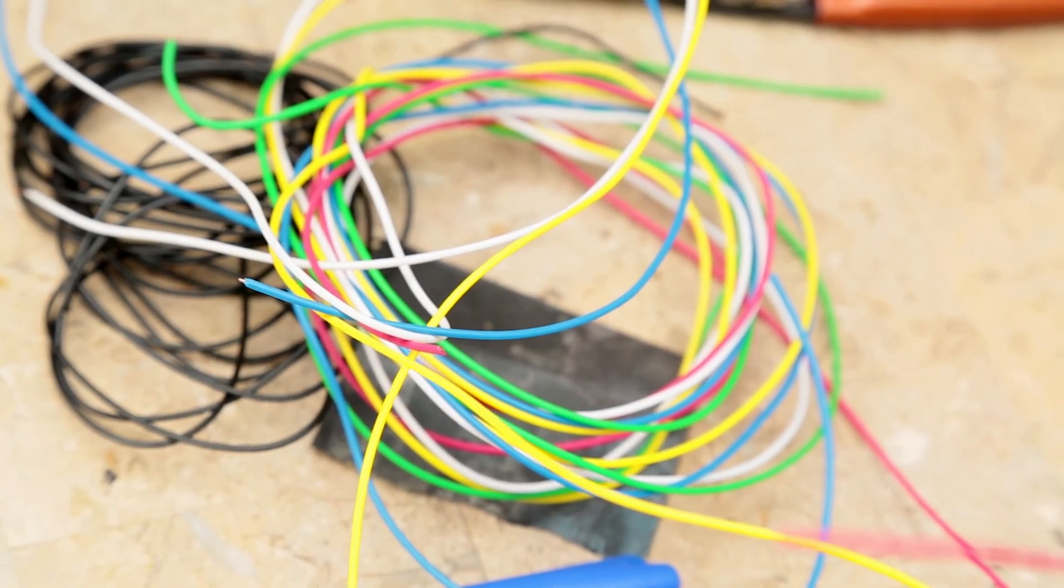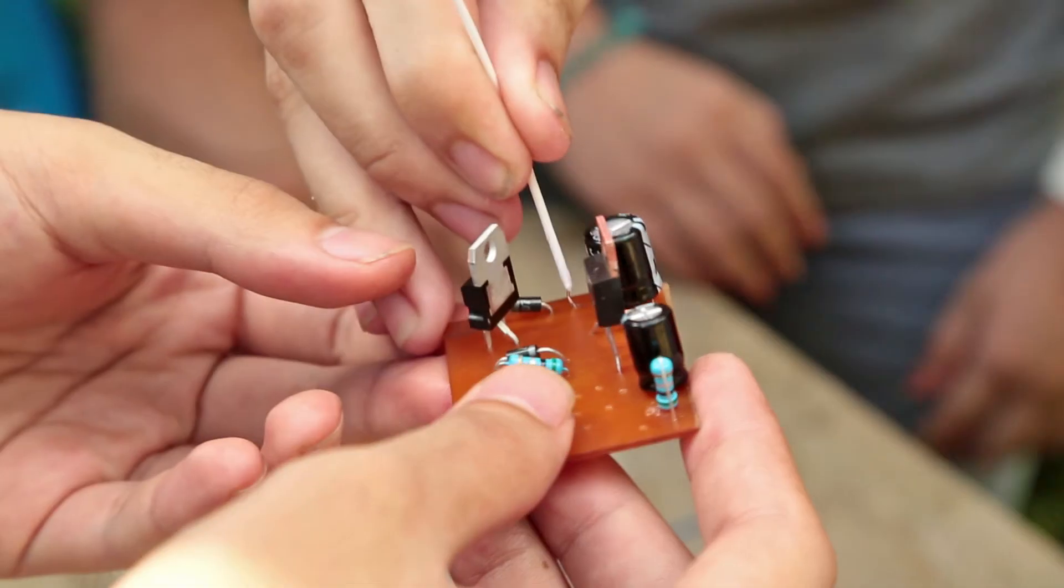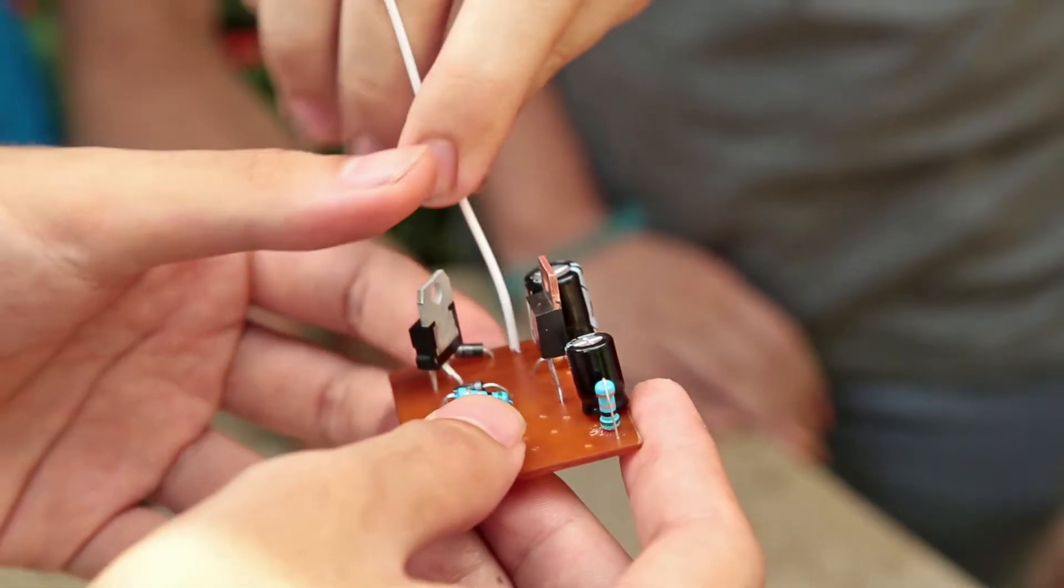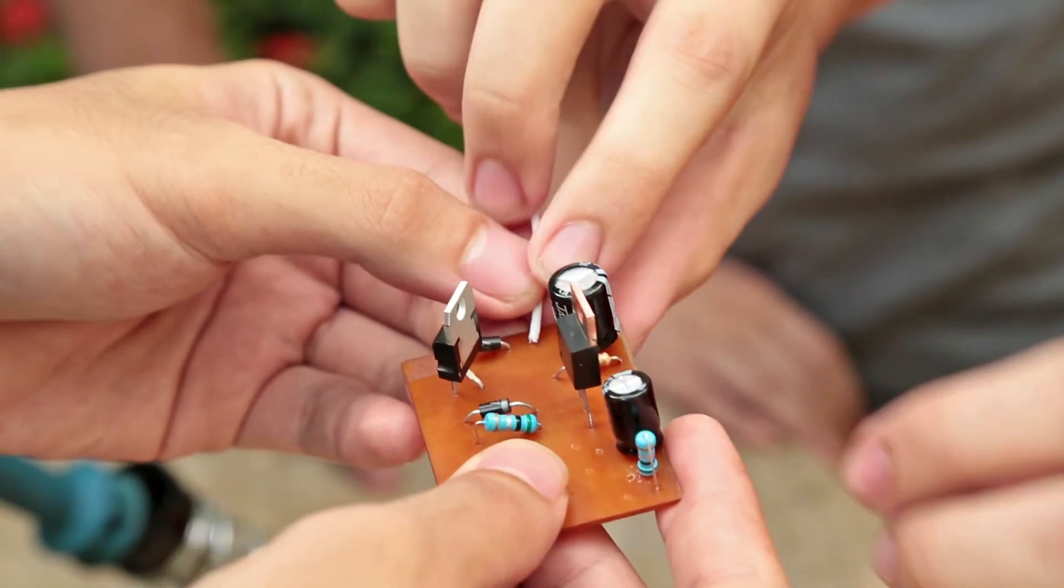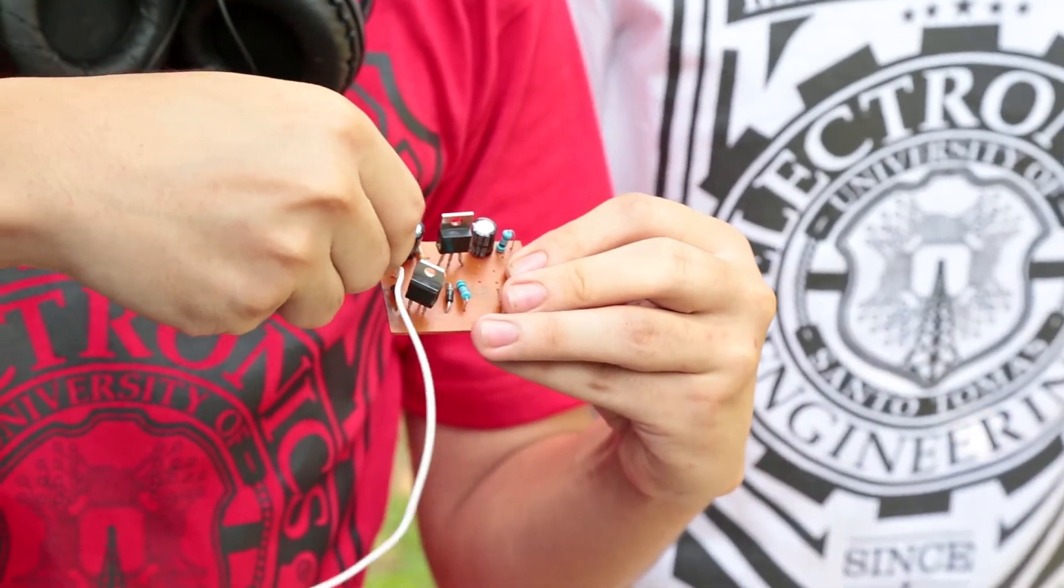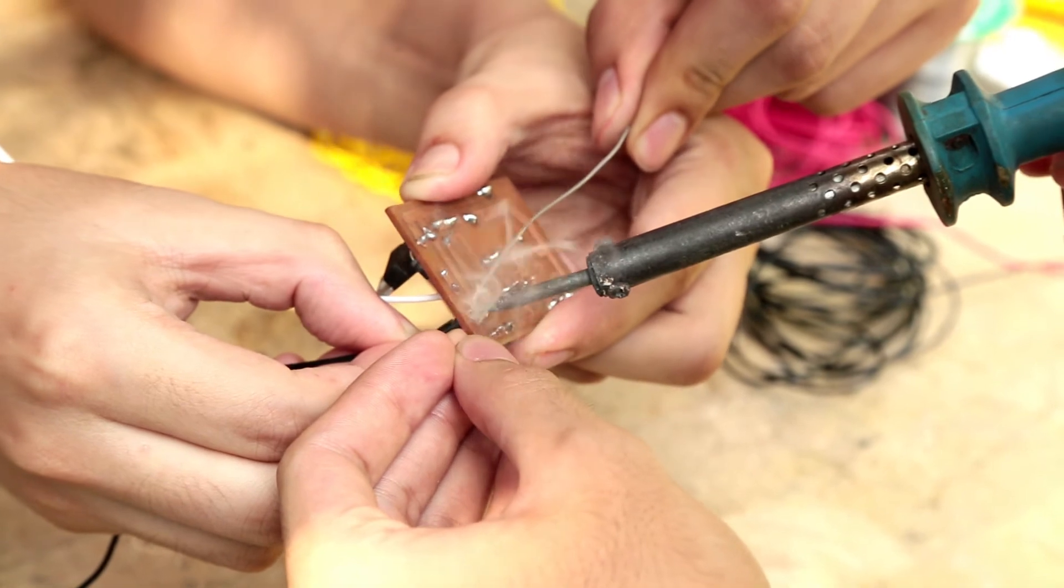Now we're going to attach the wires. It's not essential to have multiple colored wires but it's better because if you're going to troubleshoot it later, it will be much easier. Every time you put in a wire, you have to solder it in. First is the white wire for the positive terminal of the solar panel, then the equivalent ground or negative terminal.